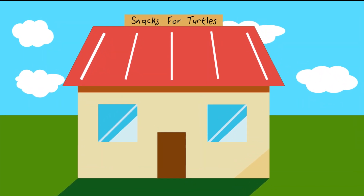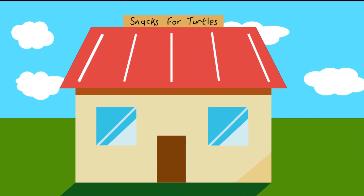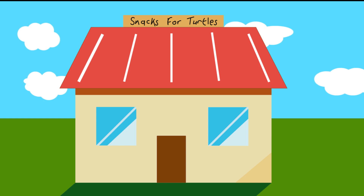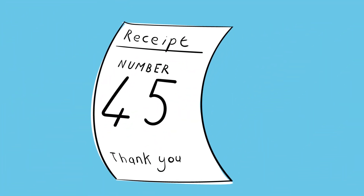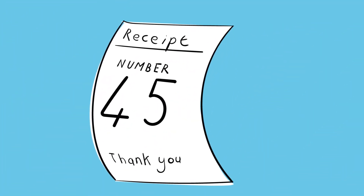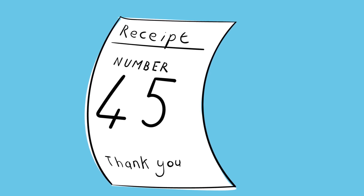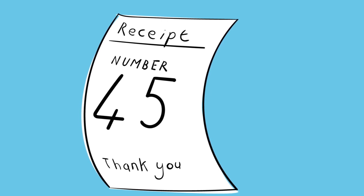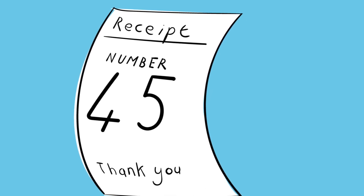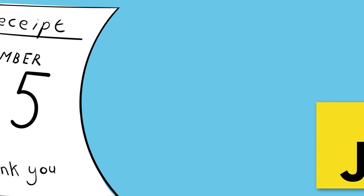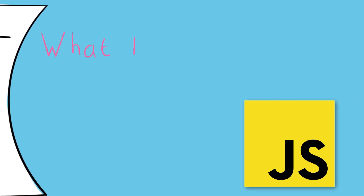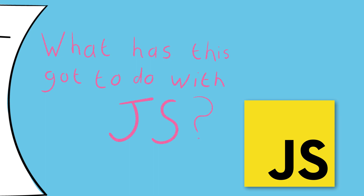Imagine you are walking into your favourite fast food chain. You specify what you want and you are given a receipt with a number on it. That is your number. You wait patiently until the number is called, letting you know that your food is ready. You now know you can walk up to the counter and collect your food. Believe it or not, you've just been involved in a promise.